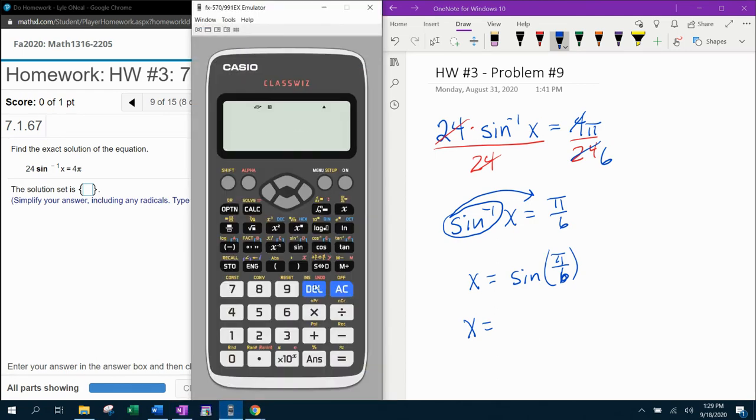Or we can figure it out from the calculator. Sine of pi over six. And that's going to be a half.